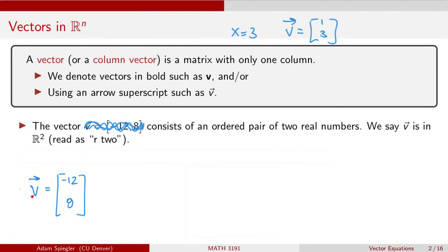For example, here is a vector v, a two-dimensional vector. Its first entry is minus 12. Its second entry is 8. And we typically write these as columns.